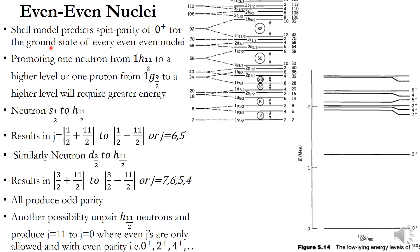We know that the shell model predicts the spin-parity of 0+ for the ground state of every even-even nucleus. For Sn-130, containing 50 protons and 80 neutrons, the 50 protons are filled up to 1G9/2 and it is a completely filled structure. The 80 neutrons are filled up to 1H11/2. The last subshell 1H11/2 contains only 10 neutrons even though it can contain 12, so there are 2 remaining neutrons needed to fill it completely.